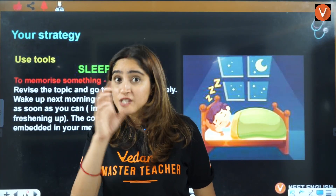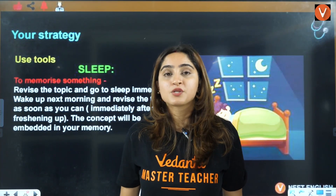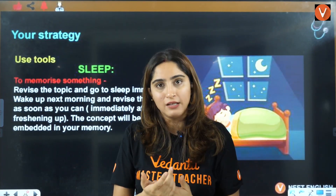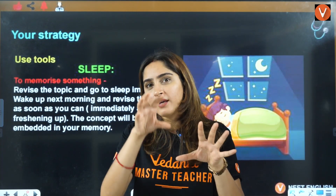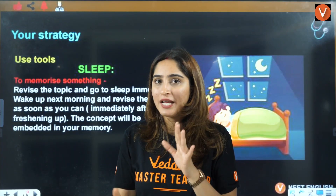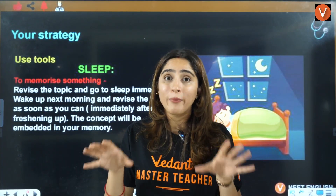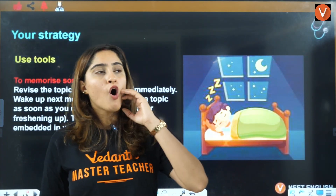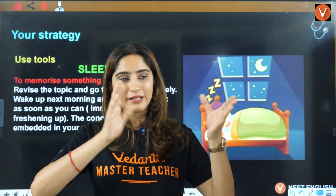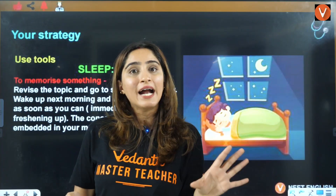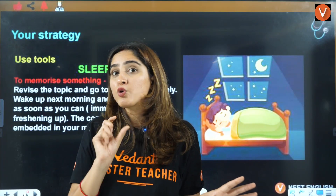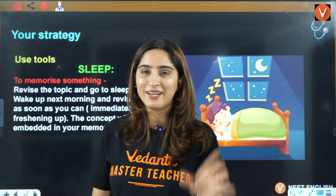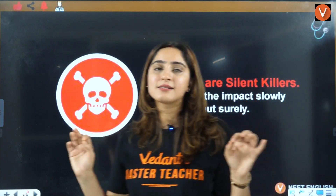I can't make a personalized planner for every student since I don't know how many chapters you've backlogged. I've given you enough points — now you have to make your own planner. You can text me on the Telegram channel or ask in the comments if you need help. I can make a general planner for how to complete your syllabus by November, but adjusting your backlogs within that is something you have to do yourself.